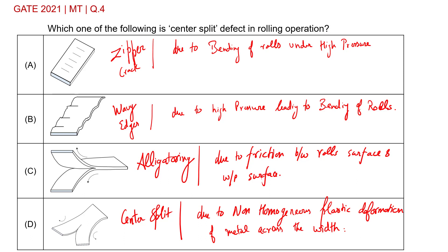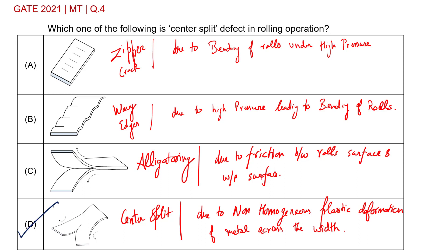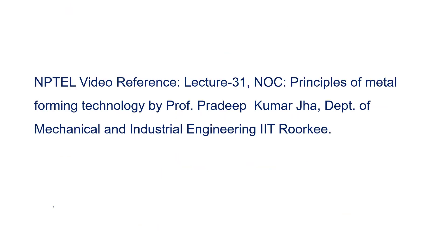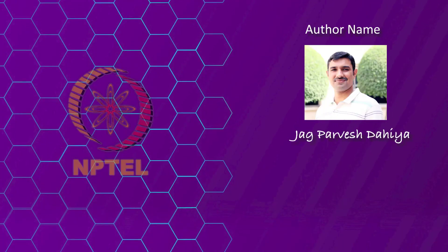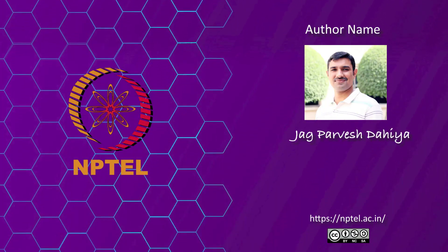As the question asks which one of the following is the center split defect in the rolling operation, the correct option is Option D. If you want to know more about rolling operation defects, you can refer to NPTEL video lecture 31, Principle of Metal Forming Technology, by Professor Pradeep Kumar Jhar, Department of Mechanical and Industrial Engineering, IIT Roorkee.